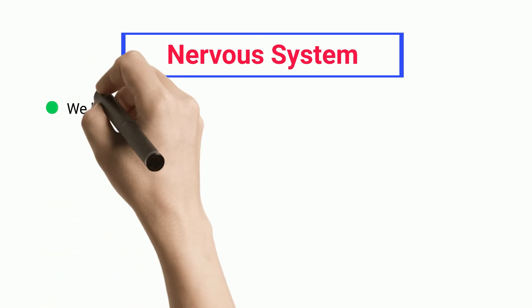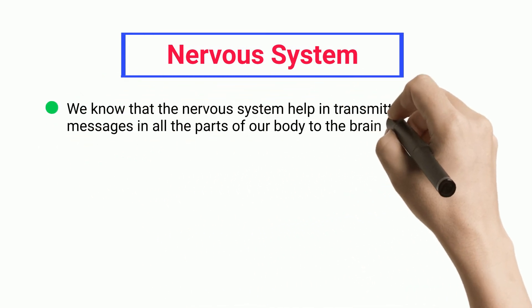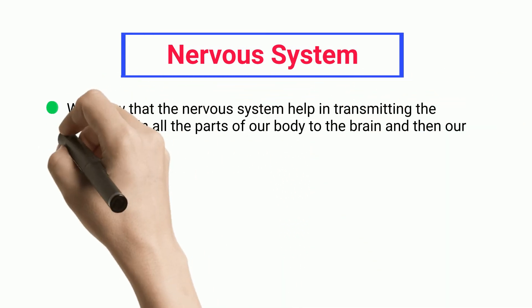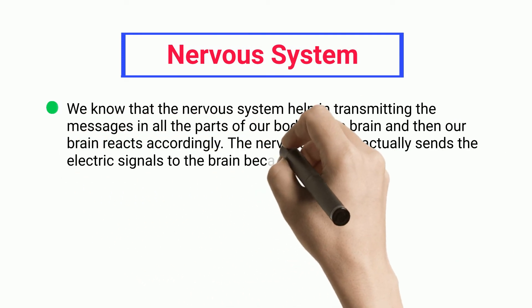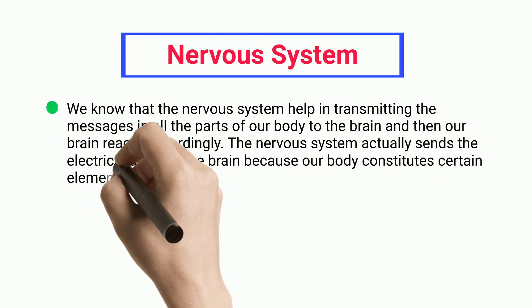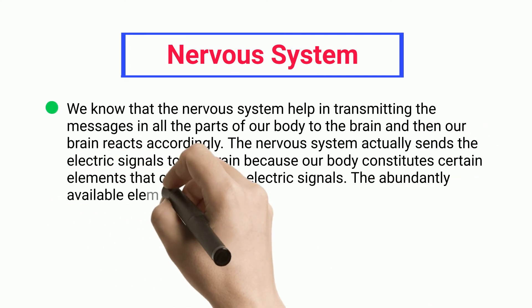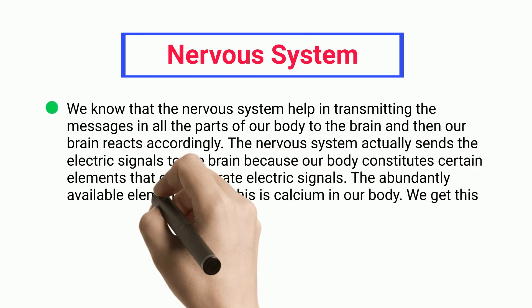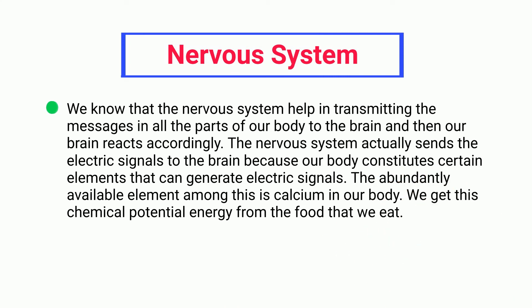Nervous System: The nervous system helps in transmitting messages from all parts of our body to the brain, and then our brain reacts accordingly. The nervous system actually sends electric signals to the brain because our body constitutes certain elements that can generate electric signals. The abundantly available element among these is calcium in our body. We get this chemical potential energy from the food that we eat.